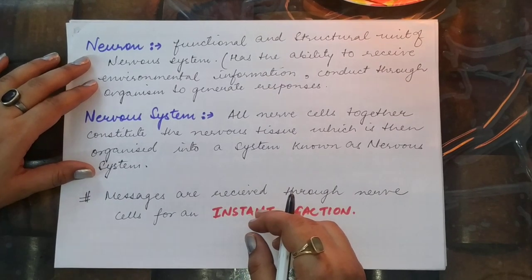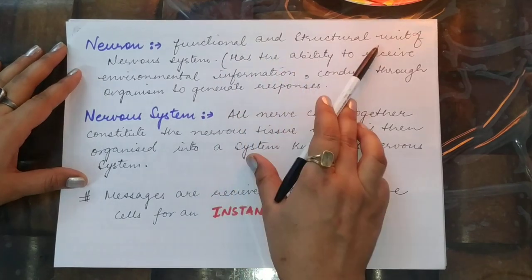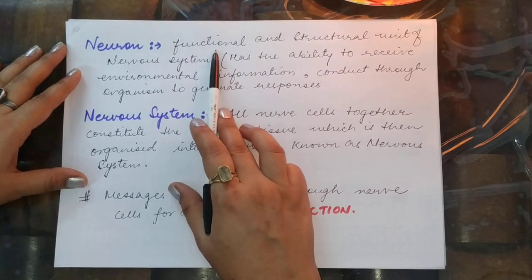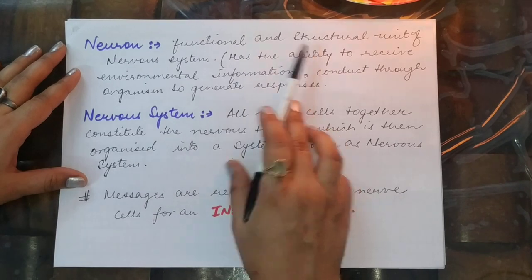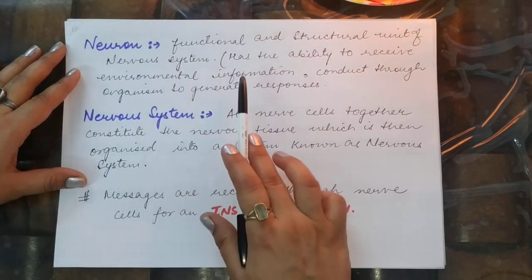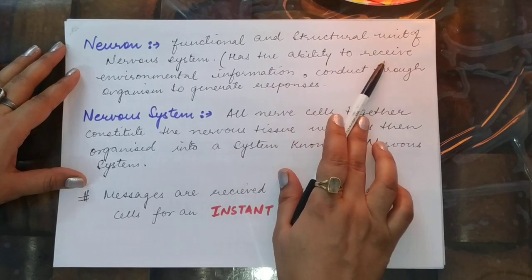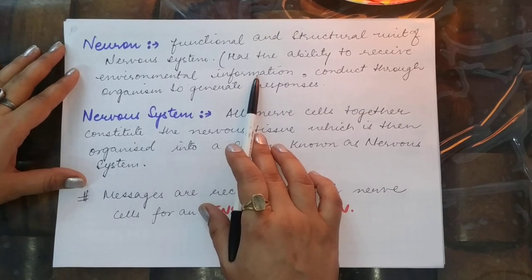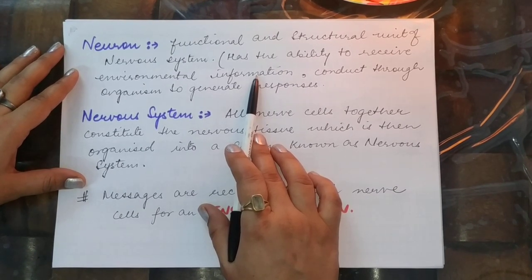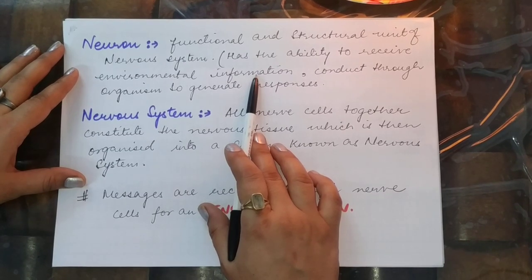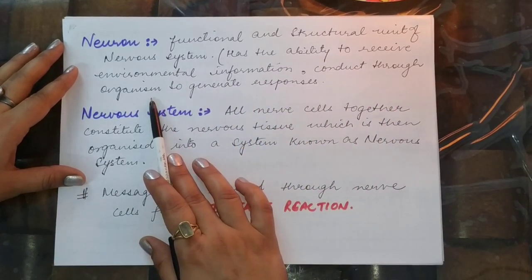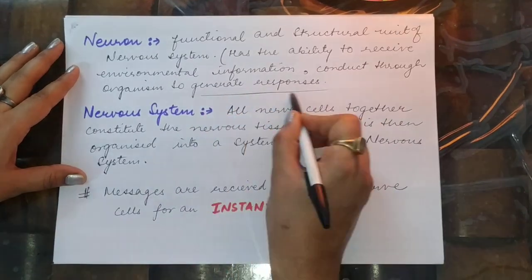A neuron is the functional and structural unit of the nervous system. It is the basic unit which performs the function, and together neurons also form the structure. Neurons have the ability to receive environmental information, which is also called a stimulus. The stimulus comes from the five sense organs — eyes, ears, nose, skin, and tongue — and will generate responses in the body.